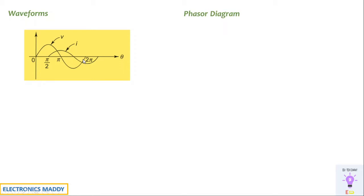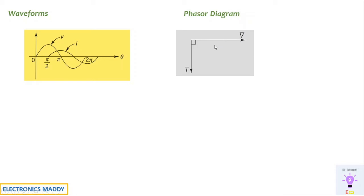Next is the phasor diagram. The reference is always taken along the horizontal axis. Since current I lags behind voltage V by 90°, the current phasor is drawn in the downward direction — the arrowhead pointing downward — and V and I are perpendicular to each other, as indicated in this position.